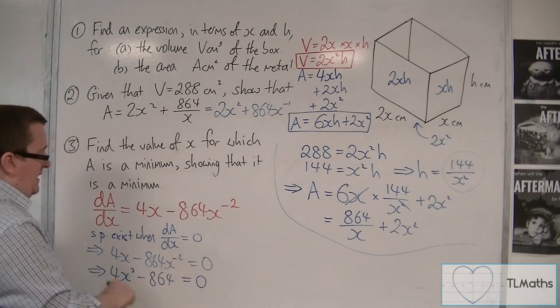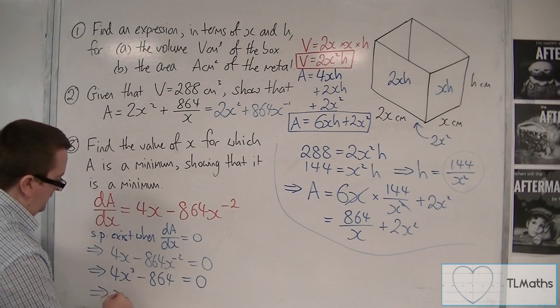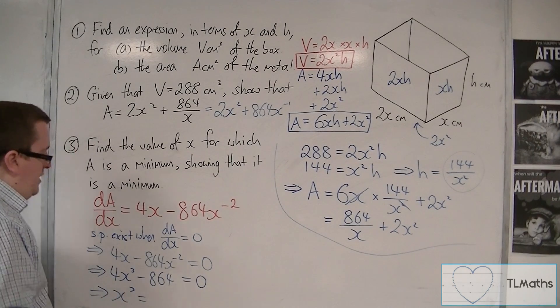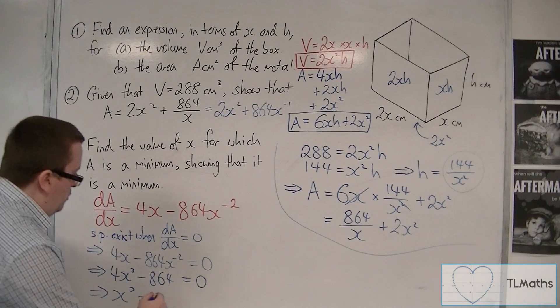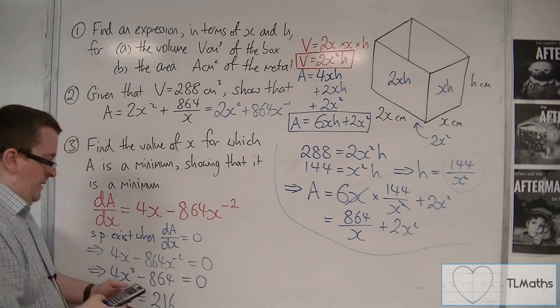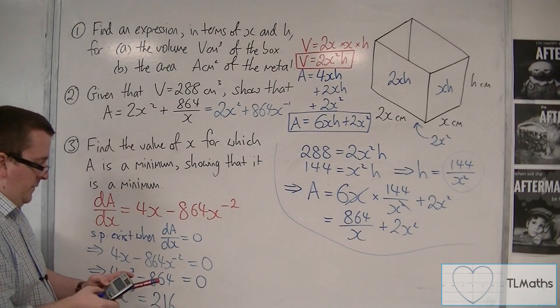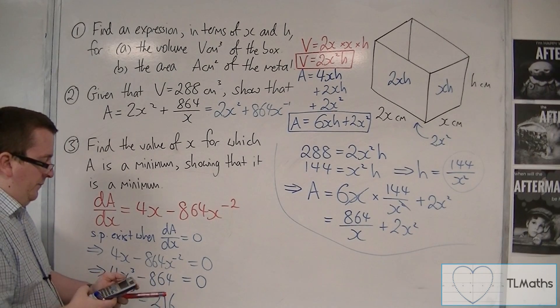I now have an equation that I can solve. Because then I can add 864 to both sides and divide by 4. So, 864 divided by 4 is 216. And the cube root of 216 is 6.